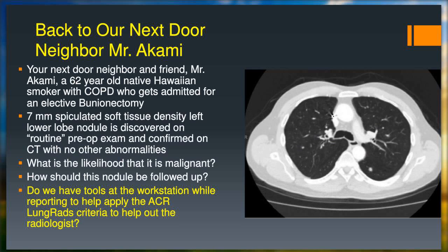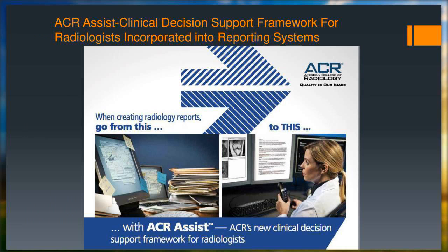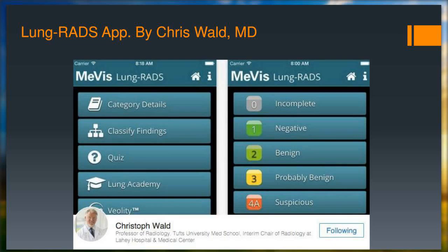Going back to Mr. Akamai with the 7-millimeter spiculated left lower lobe nodule, one tool we have is the ACR Assist tool, which shows lung RADS criteria while I'm reading out a CT scan. At least I don't have to open a book or go online to look it up — it's available at the time I'm dictating, and that's a great start from an informatics perspective. There's also a Lung RADS app by Chris Wald. But both still have a one-size-fits-all set of recommendations. Lung RADS is not personalized to Mr. Akamai.